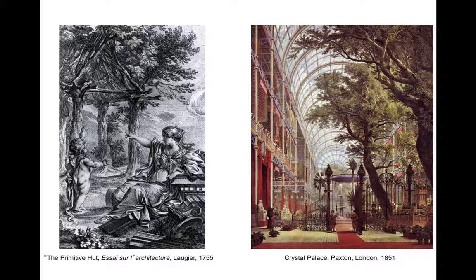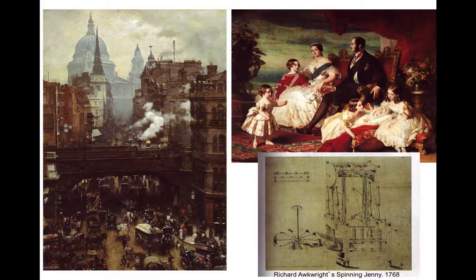It will take less than a hundred years from the publication of Laugier's Primitive Hut, where Laugier told the young architect to look away from the stone architecture of the past and instead look to nature for inspiration, to erect the Crystal Palace for the 1851 World's Fair. I found this particularly poignant image of the interior of the Crystal Palace, and I wanted to juxtapose it with Laugier, because with iron and glass, nature can even be inside of architecture. And it's going to be in Great Britain, not Laugier's France, where the Industrial Revolution is going to take hold.